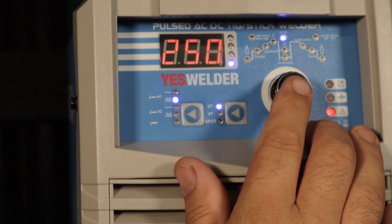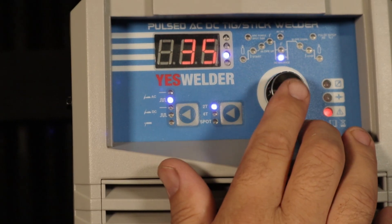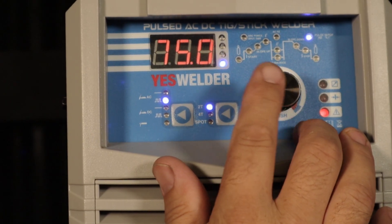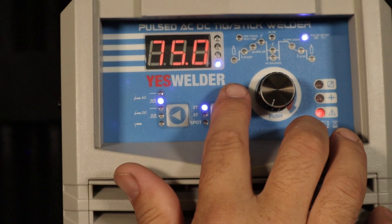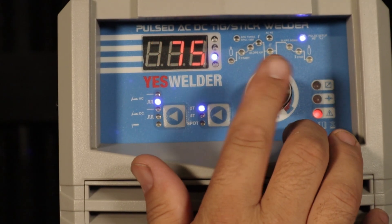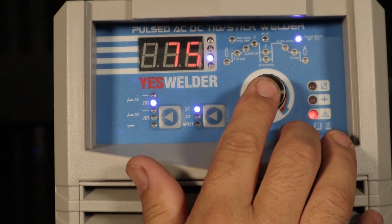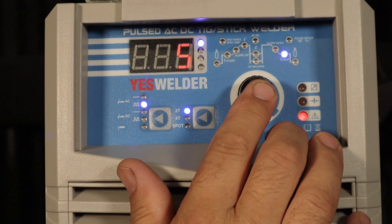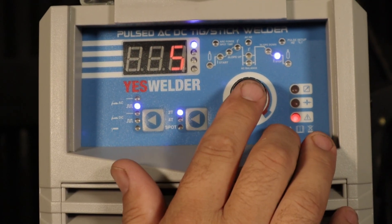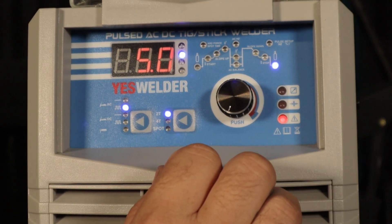250 Hz AC, AC balance of 35, 75 Hz per second at 75%, 0 downslope, 5 amps end, and 5 seconds post flow.